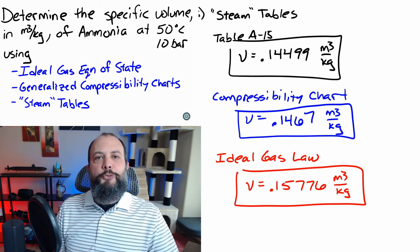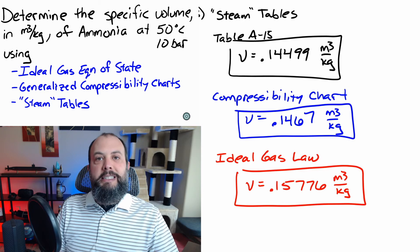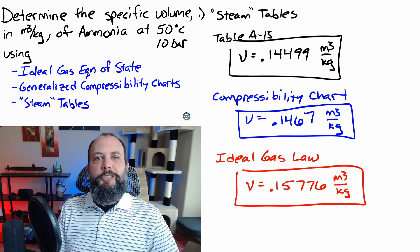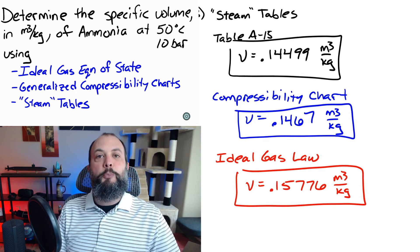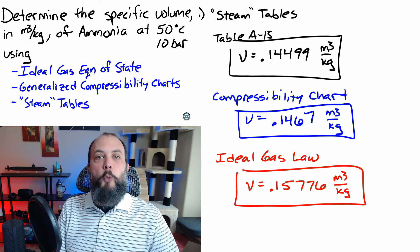So to answer the question of which one do you use? If you have tables available, use the tables. That's the correct answer. If you don't have a table available, then the ideal gas law gives a quick and easy approximation. And then the generalized compressibility chart gives you a better approximation at the expense of having to do more work.